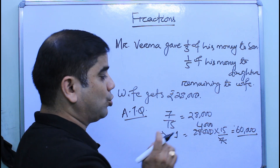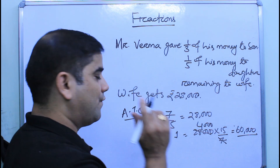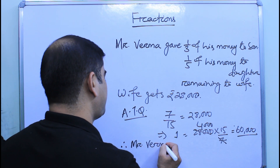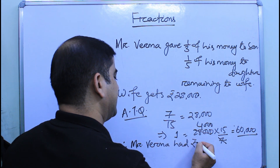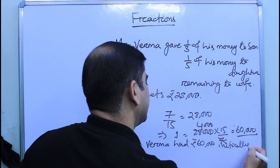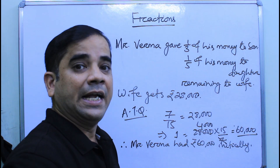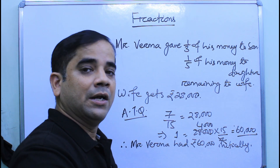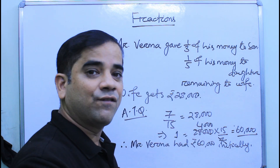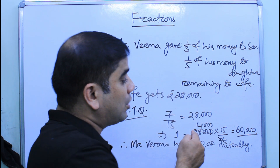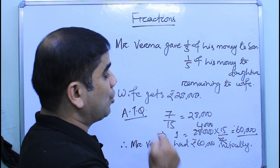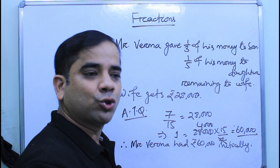Calculating 28,000 multiplied by 15 by 7 gives 60,000. This is the actual amount Mr. Barma initially had. The final statement: Mr. Barma had rupees 60,000. He gave one-third of that amount to his son, one-fifth to his daughter, and the remaining to his wife.